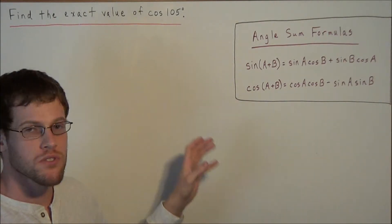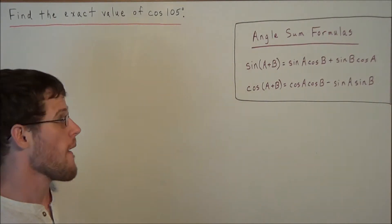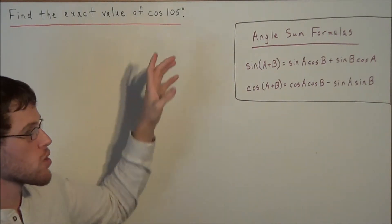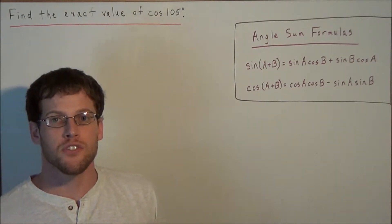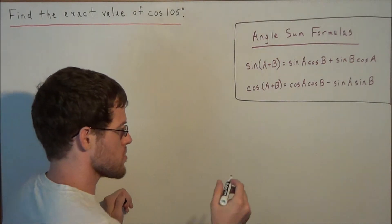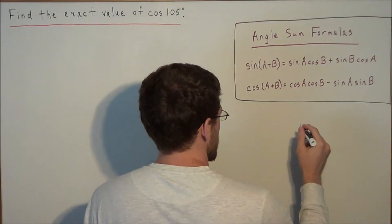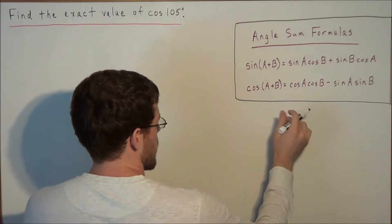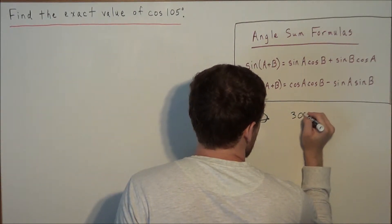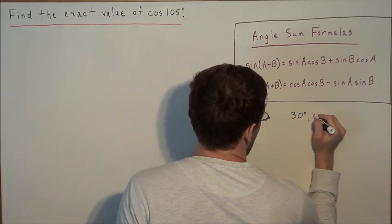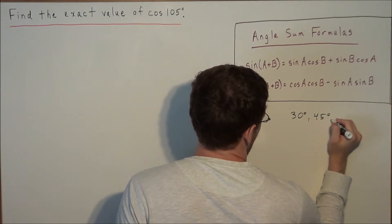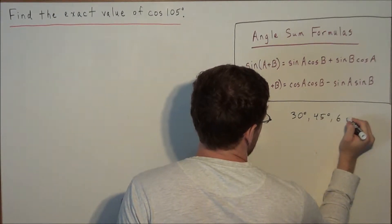The way we would use these angle sum formulas is we need to break the angle in question into two pieces, and the two pieces we want to use — we're going to select two angles from this list. We have 30 degrees, 45 degrees, and 60 degrees.